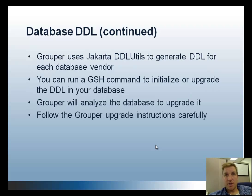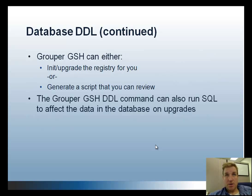So we use Jakarta DDL utils to generate DDL for each database vendor. You can run a GSH command — GSH is Grouper's command line utility — to initialize or upgrade the DDL in your database. Grouper will analyze the database to upgrade it. You can follow the Grouper upgrade instructions carefully, step by step, to make sure that everything is done the way that we've tested it. You can use GSH to either edit or upgrade the registry, or generate a script that you can review — in production, you might want to eyeball it to see if anything looks weird.